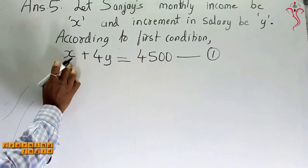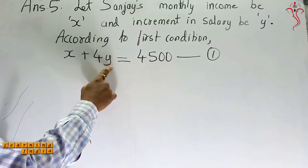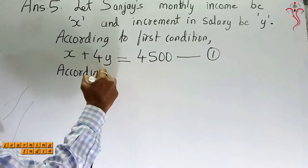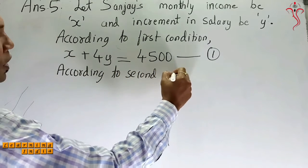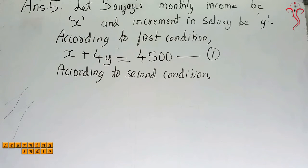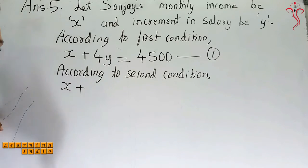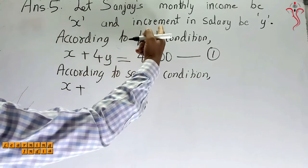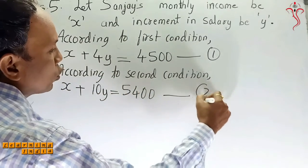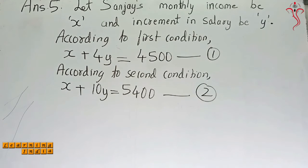This is the fixed salary every month plus 4 years' increment: 4Y, which equals 4500 — let that be equation number 1. Now according to the second condition, after 10 years his monthly income will become 5400. So X plus 10Y equals 5400 — let that be equation number 2.